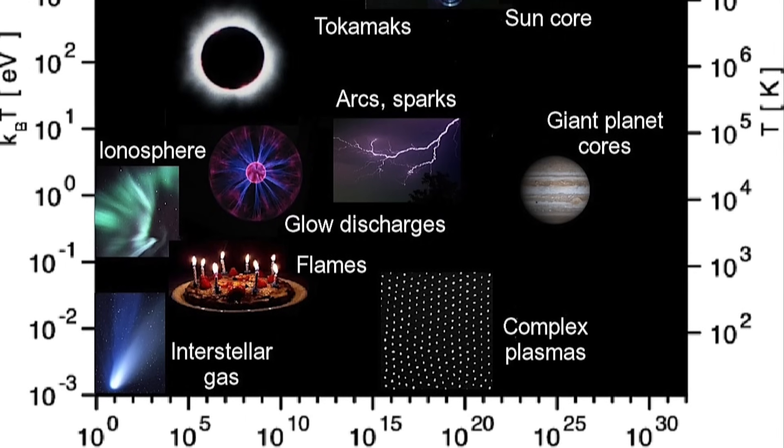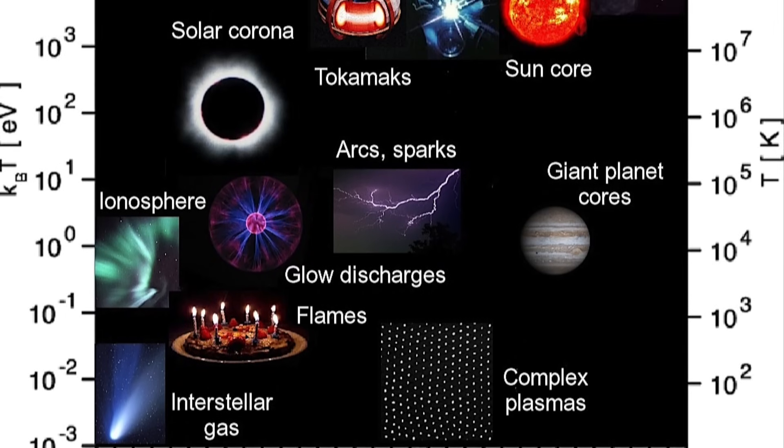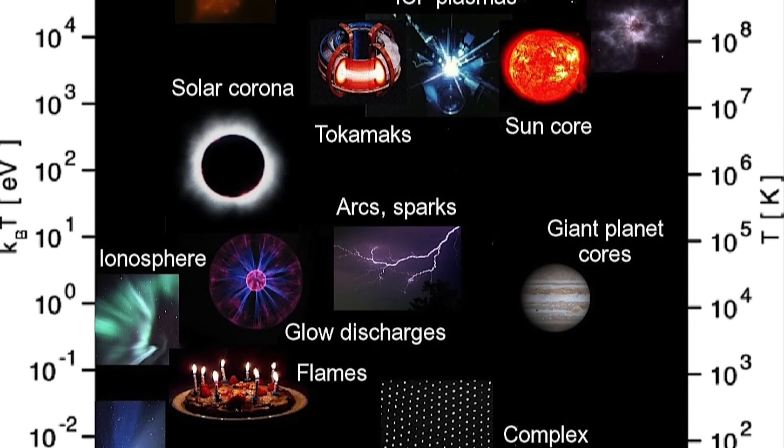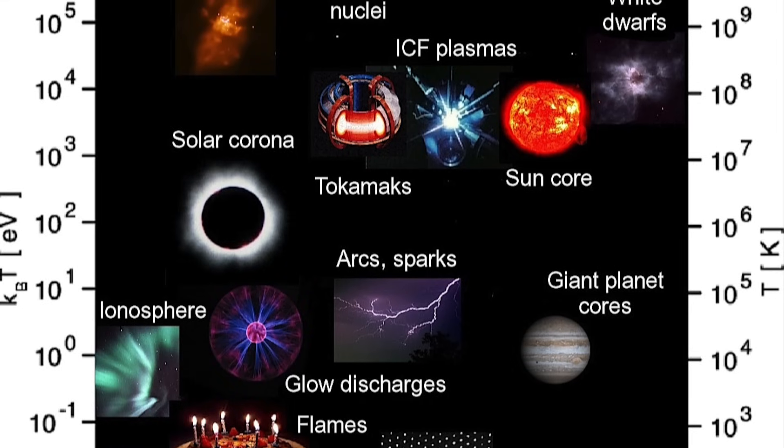Good examples of plasma would be fluorescent and neon lights. Earth's magnetosphere, the solar wind, and the sun itself are all plasma.